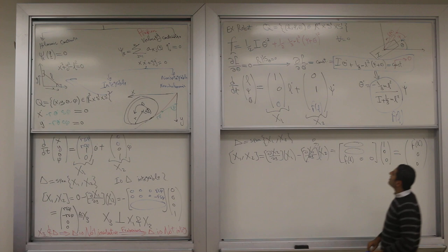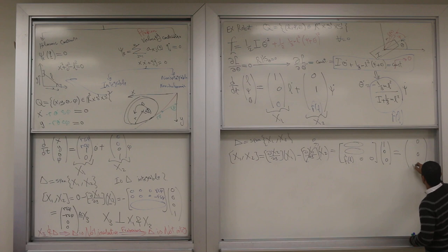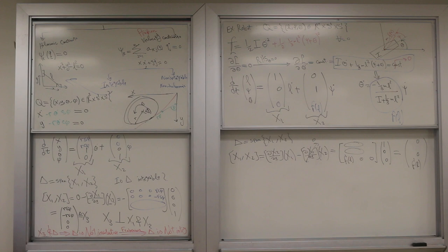And here is what we get: we get F prime of L. Do I have something wrong? It's going to be on the last row. Oh, you're right. That's correct. Zero, zero, F prime. This is the resulting vector.